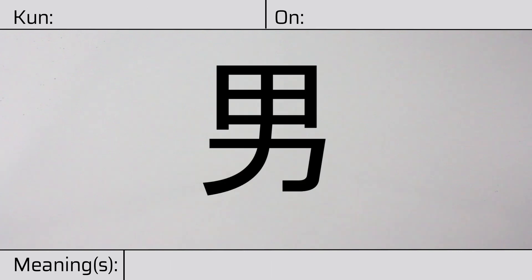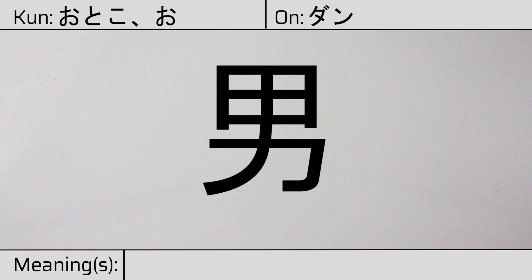Welcome to this lesson on Japanese kanji. Today, we'll be discussing this character. This kanji has kunyomi, or Japanese readings of otoko or o. And it has onyomi, or Chinese readings of dan or nan. This character has the meanings male or man.